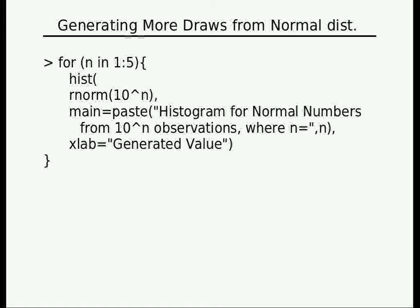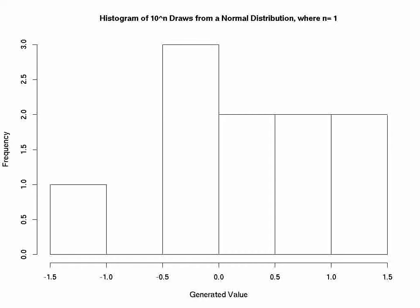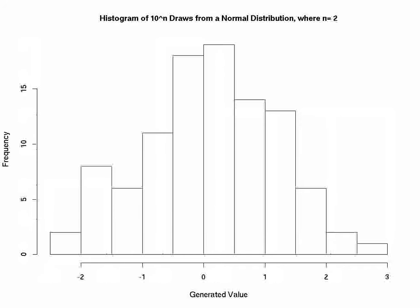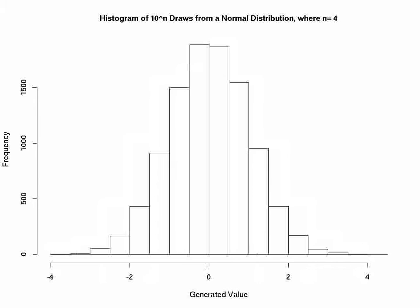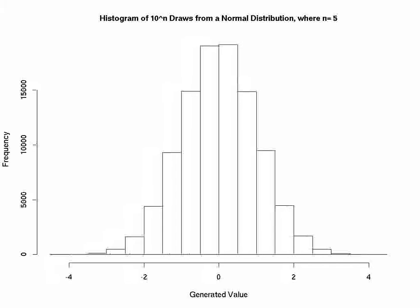Generating more draws from a Normal Distribution. With the 10 drawn samples, 100, 1,000, 10,000, and 100,000 drawn samples can be displayed via a histogram. Likewise, it can be seen as the numbers increase one more closely observes Normally Distributed Samples.